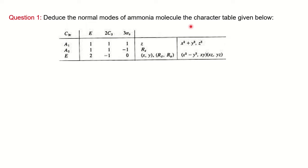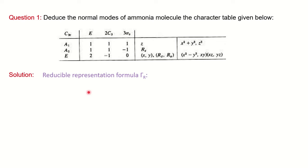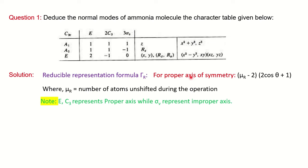The question is: deduce the normal modes of the ammonia molecule for the given character table. This question is taken from a previous year question paper from BC University. Normal modes means finding out the normal vibration modes for ammonia. The character table is already given. To solve it, we first calculate the reducible representation, then the irreducible representation, and based on that we decide and draw the normal modes.